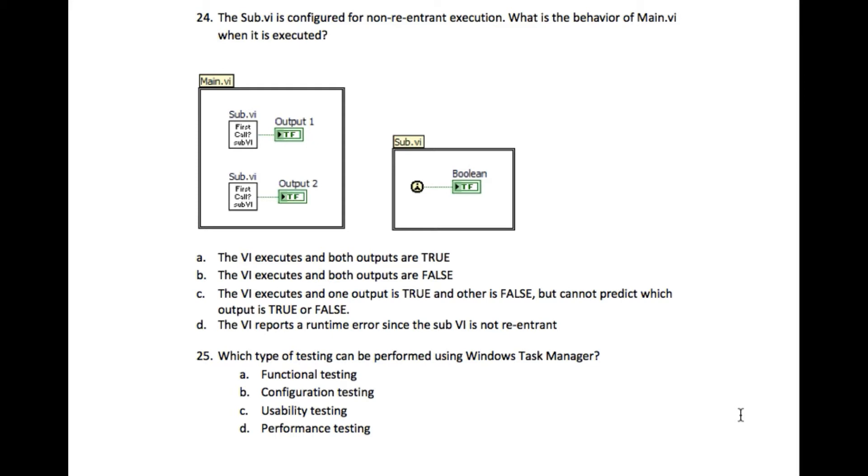Basically, non-reentrant means the two or more copies of the sub-VI won't be running in parallel, but they will run one after another. So in this case we have two sub-VI instances, so one of the sub-VI is going to wait for another one to execute.